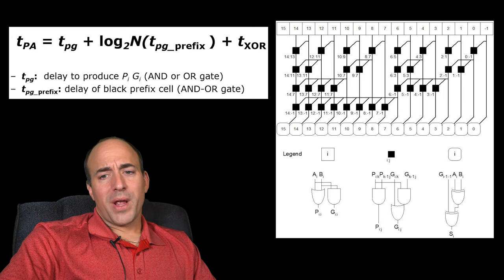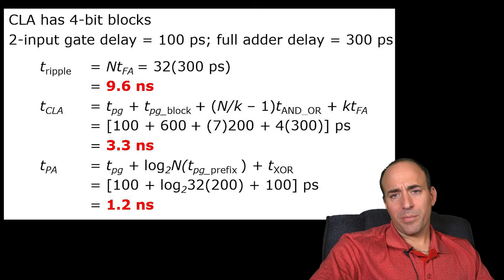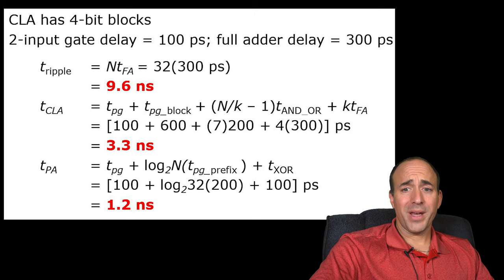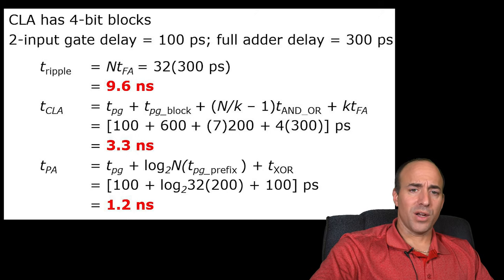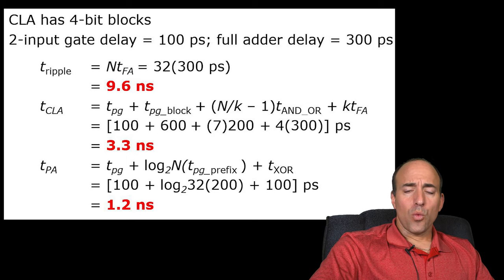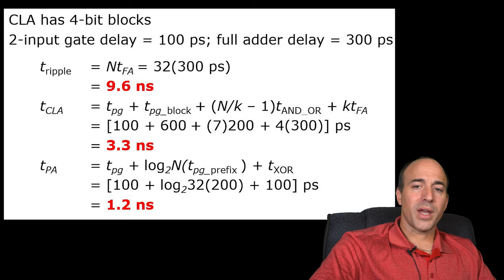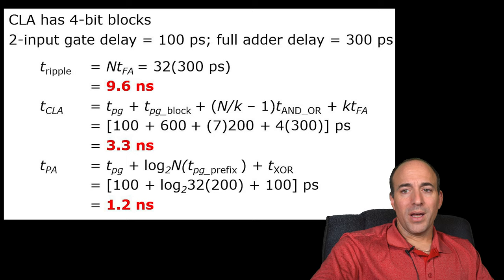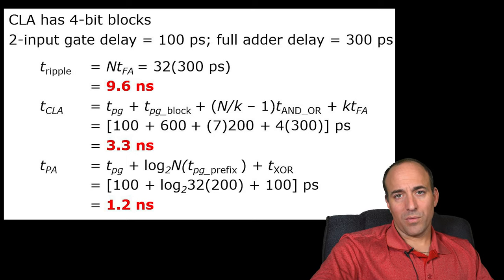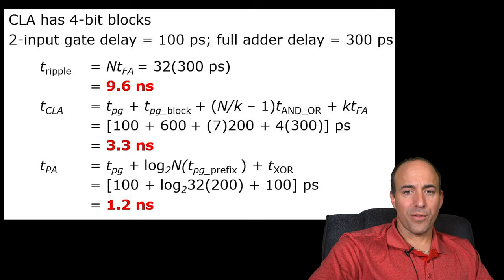Comparing propagation delays for a 32-bit adder, assuming 100 picosecond two-input gate delay and 300 picosecond full adder delay: the ripple carry adder requires 9.6 nanoseconds; the carry look-ahead adder with four-bit groups requires 3.3 nanoseconds; and the prefix adder requires 1.2 nanoseconds. The prefix adder is 8 times faster — the difference between running a CPU at 104 megahertz versus 833 megahertz, assuming the adder is the critical path.